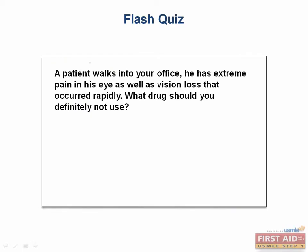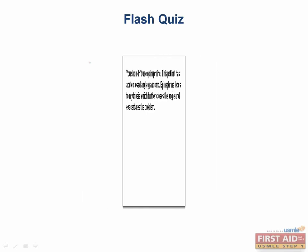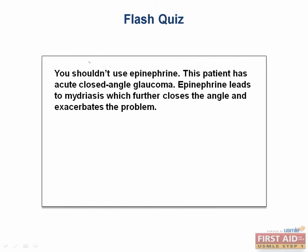Flash quiz: a patient walks into your office with extreme pain in his eye as well as vision loss that occurred rapidly. What drug should you definitely not use? You should not use epinephrine. This patient has acute closed-angle glaucoma. Epinephrine leads to mydriasis, and as we discussed, this will further close the angle and actually make the problem a lot worse.